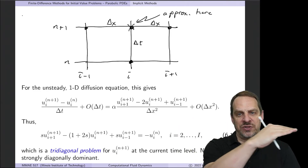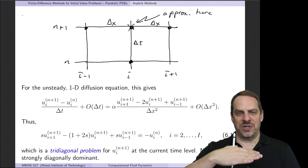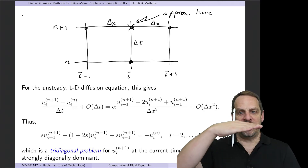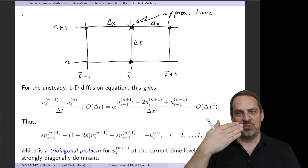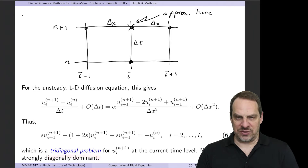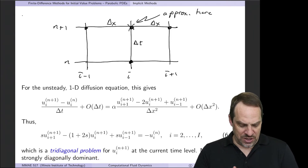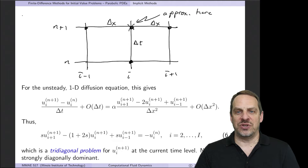This is now a tridiagonal system of equations that we can solve implicitly — that's why we call it an implicit method. We solve simultaneously, in a coupled fashion, for all values of u at the current time level. We can solve this tridiagonal system using the Thomas algorithm. It is strongly diagonally dominant: 1 plus 2s is bigger than 2s, so the Thomas algorithm will always work.